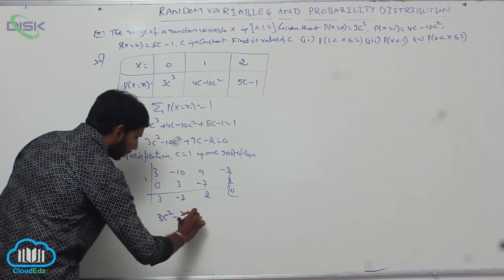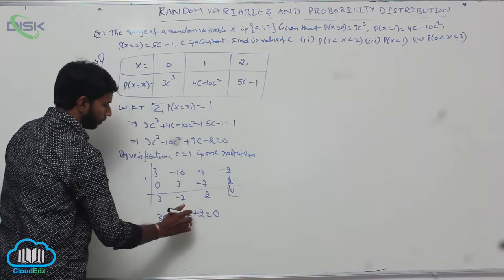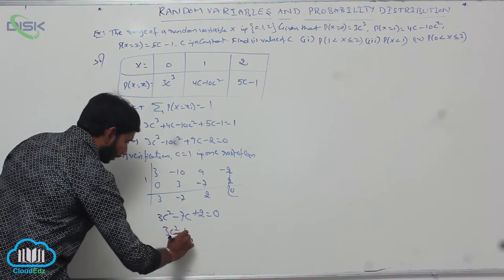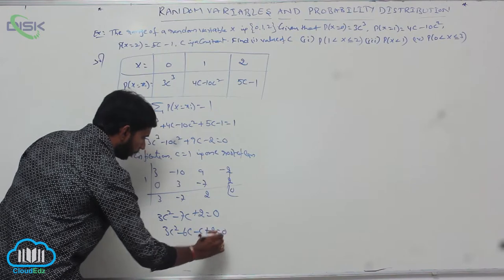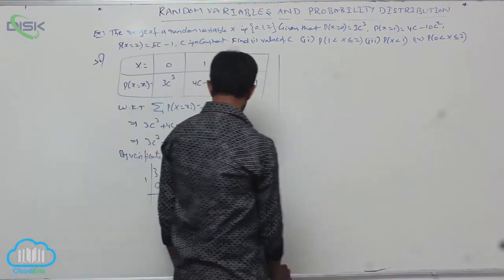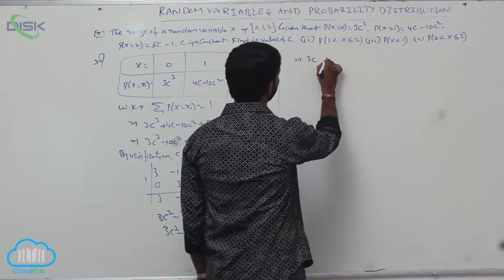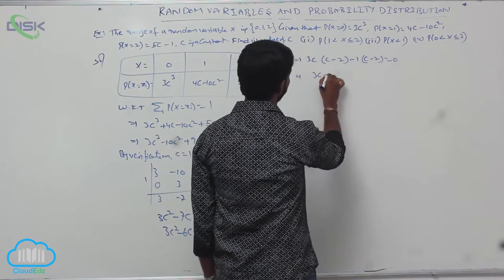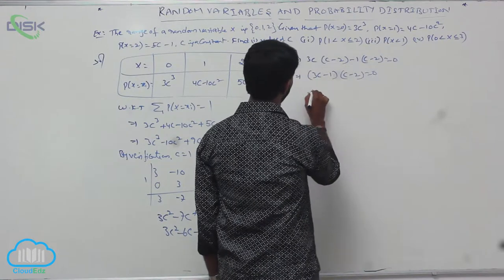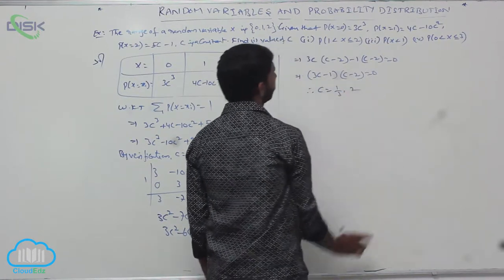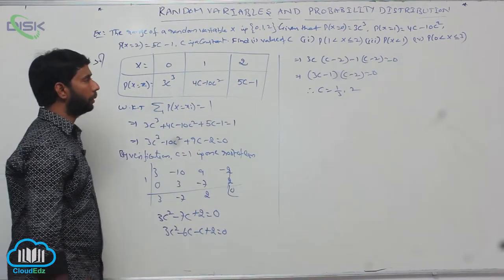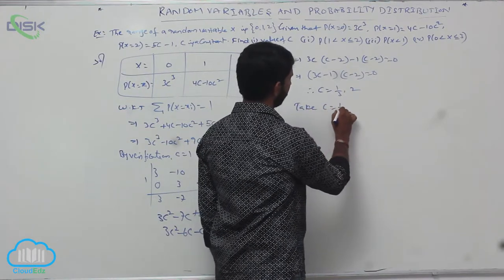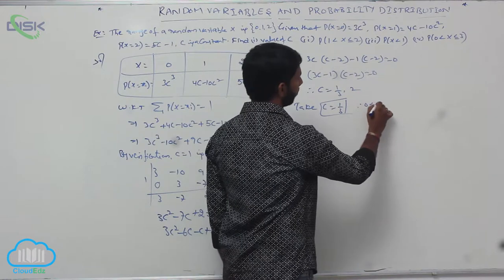Dividing out the factor (C − 1) gives the quadratic 3C² − 7C + 2 = 0. Factoring: 3C(C − 2) − 1(C − 2) = 0, so (3C − 1)(C − 2) = 0. Therefore C = 1/3 or C = 2. Taking C = 1/3, since 0 < C < 1.